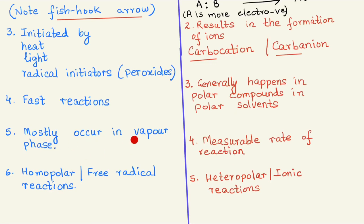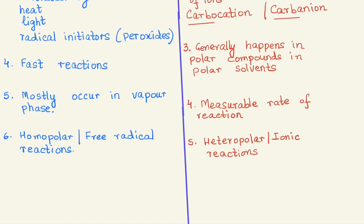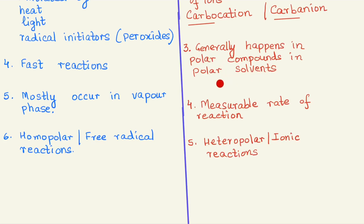Homolytic bond fission usually occurs in vapor phase, whereas heterolytic bond fission takes place in polar solvents — so these are in solution state. Reactions involving homolytic bond fission are known as homopolar or free radical reactions. You can write this as a separate point or as a simple explanation — nothing hard and fast, it's just tabulated to make it easier.